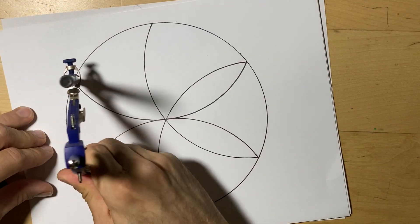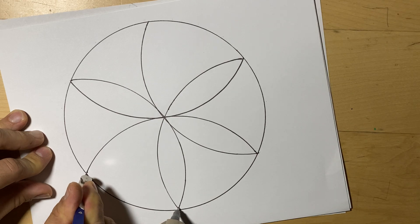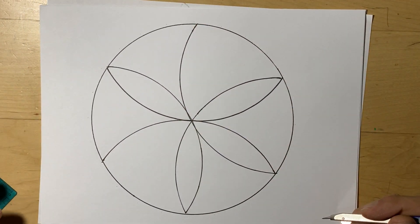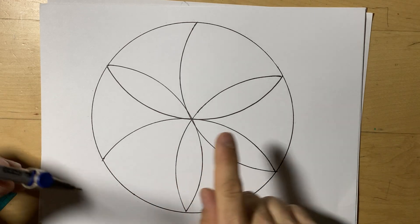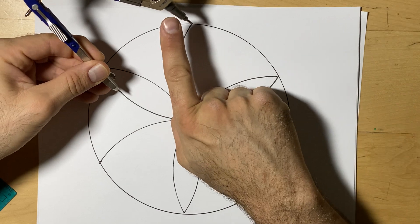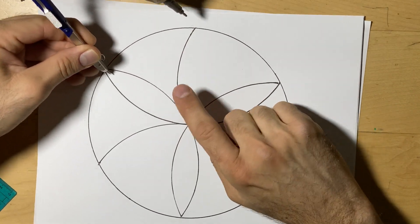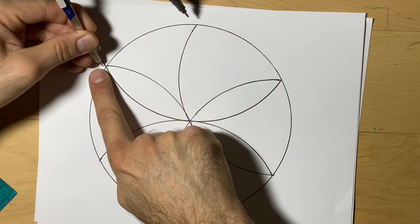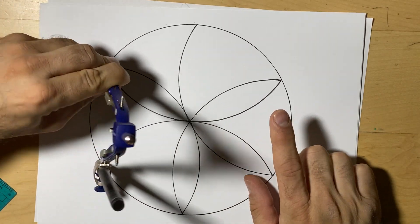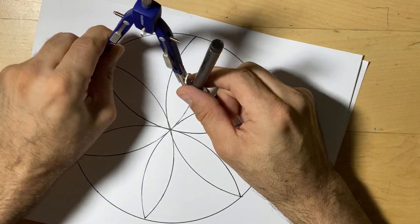If you ever get distracted and aren't sure where to position your compass, you can go to where the pen should be drawing and it'll basically point on the edge of the circle where your compass should go. And this is our final petal or seed.